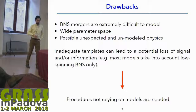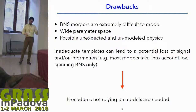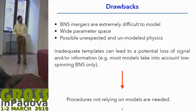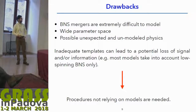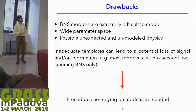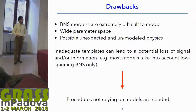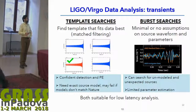What are the drawbacks of these kinds of events? Basically, these events are extremely difficult to model, so an extremely wide parameter space has to be explored. We can also expect some unmodeled physics and unexpected events. The templates used in matched-filtering searches can lead to a potential loss of signal and information, and with a very wide parameter space, a full matched-filter analysis is almost unfeasible, especially in the post-merger part of the signal. What we need are procedures that do not rely on models. That's why in LIGO-Virgo we have two different approaches.